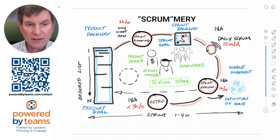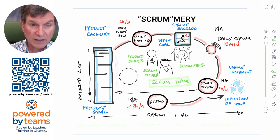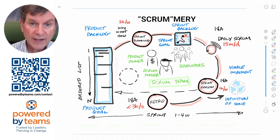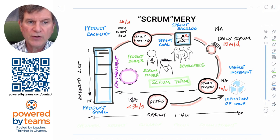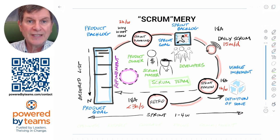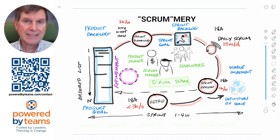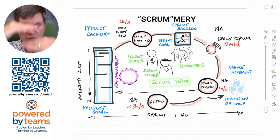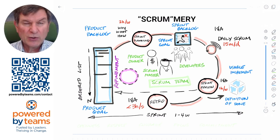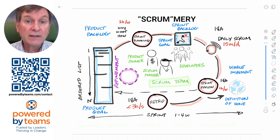We've taken a look at the three accountabilities in green, the five events in red, and the three artifacts in blue along with their commitments. There's one other activity that goes on in Scrum — product backlog refinement — which is an ongoing activity to get things ready for upcoming sprint plannings. It's not sequential; it goes on concurrently with the sprints. Things you might do in refinement include reordering items in the product backlog, clarifying things, splitting things — really anything you need to do to get ready for upcoming sprint planning.